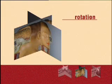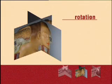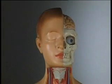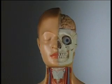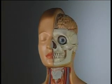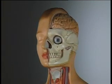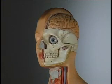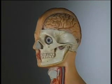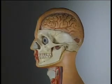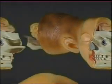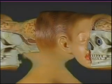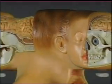In the next example, the camera is static and an object rotates in front of it. After the transformation, the model's head can be seen from all angles simultaneously.